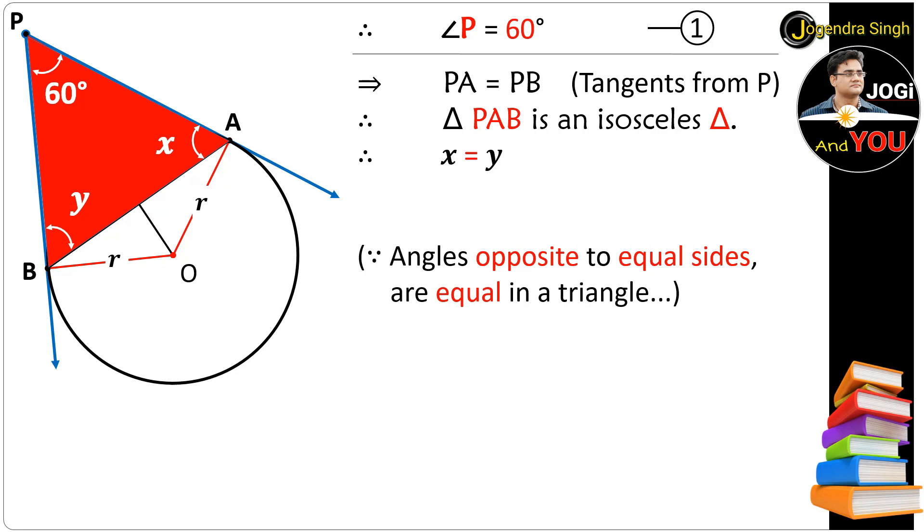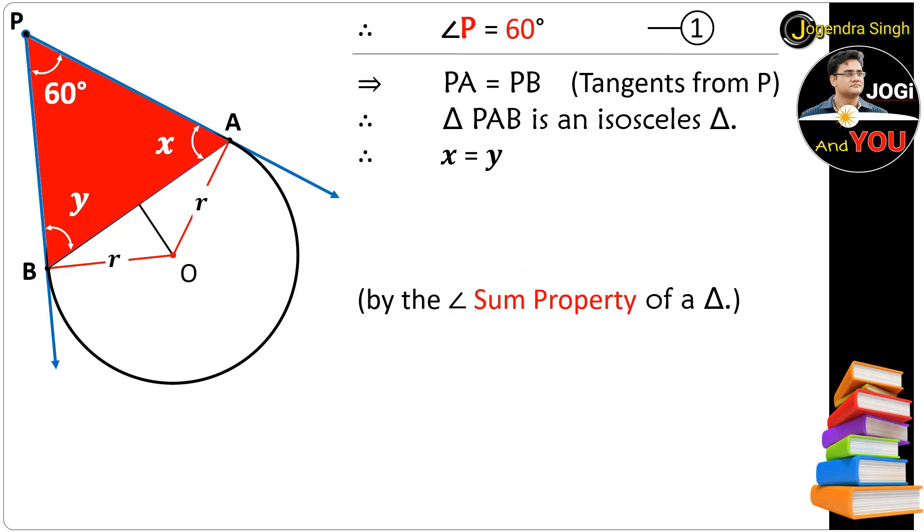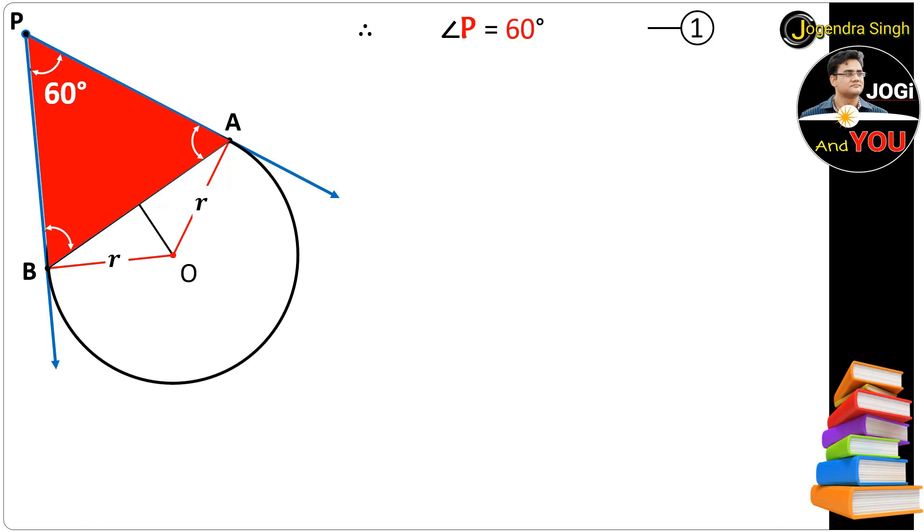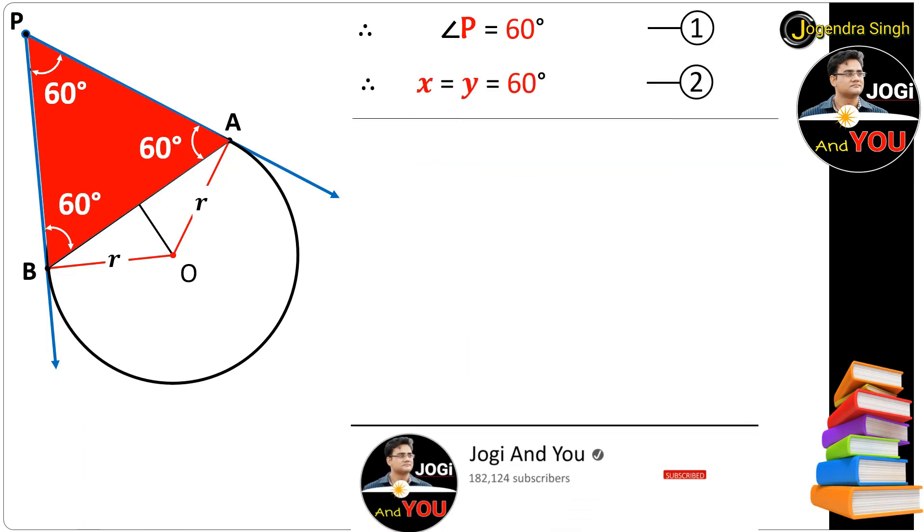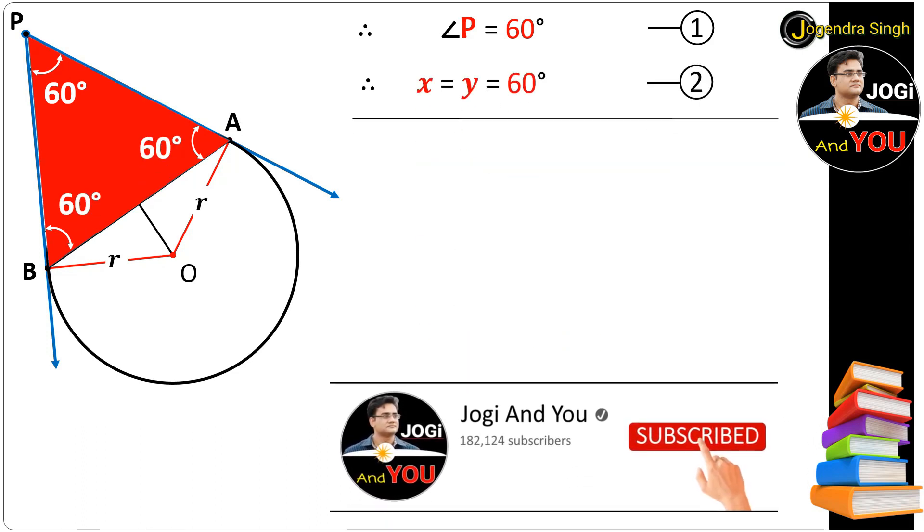Now by the angle sum property in this triangle, the sum of all angles is 180 degrees. By replacing the values, P is 60 degrees and x and y are equal. By transferring all numeric values to the right side, we get x equals 60 degrees. But because x and y are equal, both are equal to 60 degrees. This is our equation number 2.